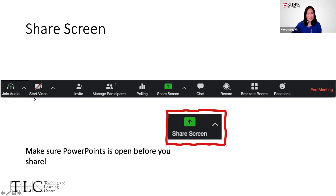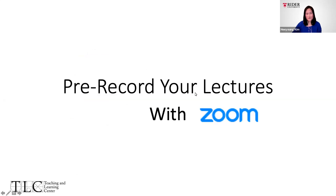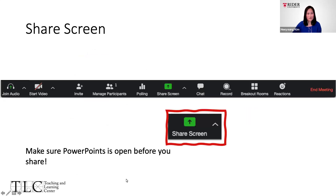At the bottom of the screen you will see the black bar with a couple of different menu options. If you don't see it, please move your mouse or cursor over the Zoom area to be able to see the black bar menu option.